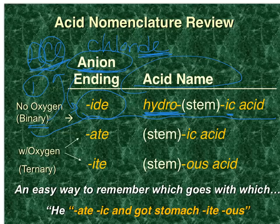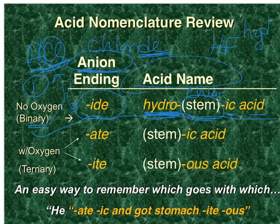Let's look at HCl: hydro plus the stem 'chlor' gives us hydrochloric acid. What would you name HF? It's binary — it has two different types of elements — so that would be hydrofluoric acid.